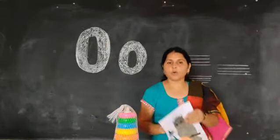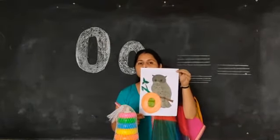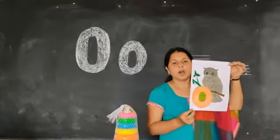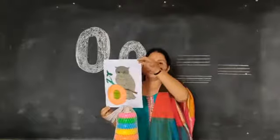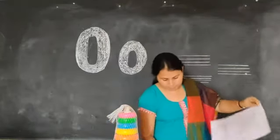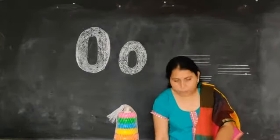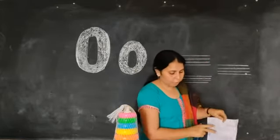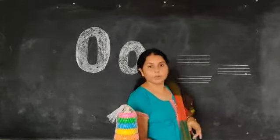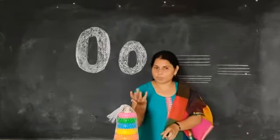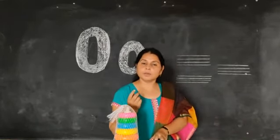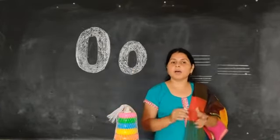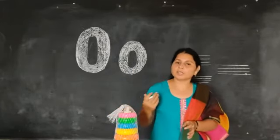Okay. Now, look. Orange is blue. What is this? Orange is blue. Now, look. Orange is blue. We are living with orange. It's orange. Orange is brown. And the orange is brown. We are living with orange.